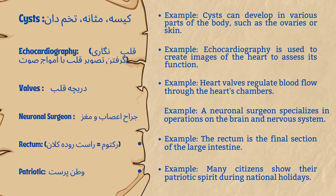Valves. Example: heart valves regulate blood flow through the heart's chambers. Neuronal Surgeon. Example: a neuronal surgeon specializes in operations on the brain and nervous system. Rectum. Example: the rectum is the final section of the large intestine.